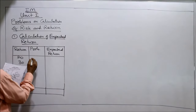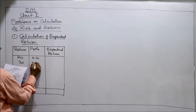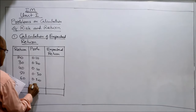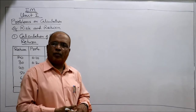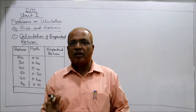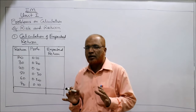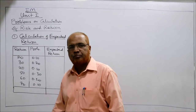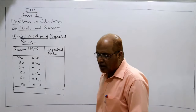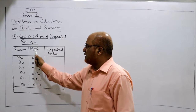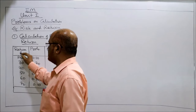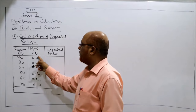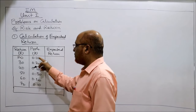Probabilities are given: 0.10, 0.20, 0.10, 0.30, 0.20, and 0.10. Remember, the total of probabilities must always be equal to 1. Check: 10 + 20 + 10 + 30 + 20 + 10 = 100 — correct. The total of probability always equals 1. Now simply multiply return with probability to get expected return. This is R, this is P. So 20 × 0.1 = 2.